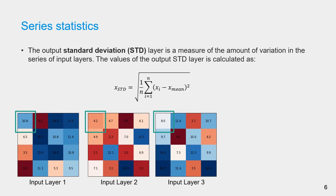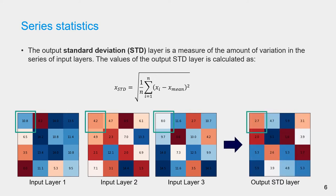Similarly, the standard deviation layer of the series can also be calculated in the r.series tool. Standard deviation is a measure of the amount of variation among the input layers. This is a useful statistic to see variation between periods. For example, if we have a series of rasters representing annual rainfall, we can see where in the area there is the highest inter-annual variation of rainfall. The values of the output standard deviation layer are calculated using this formula. For example, applying this formula, the standard deviation of the first pixel here is 2.7.